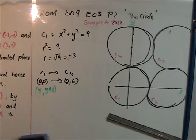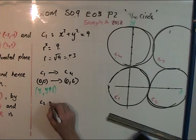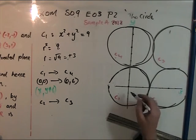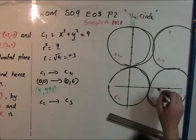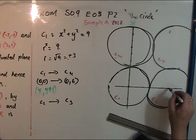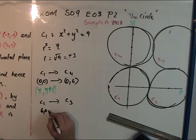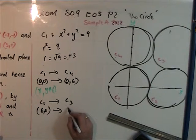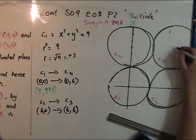Now applying the same translation from C2 to C3. C2 is at (6,0). Moving with the same translation where X doesn't change and Y goes up 6, we get C3 at (6,6).